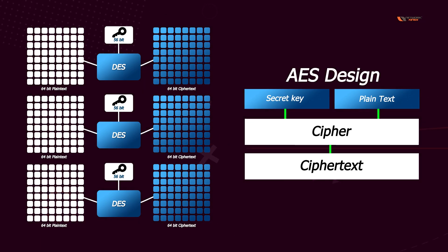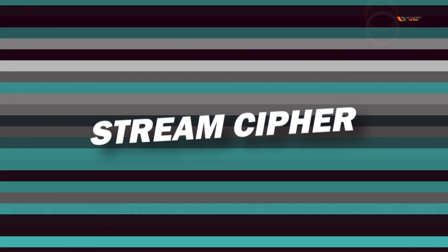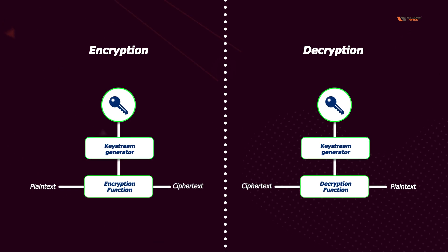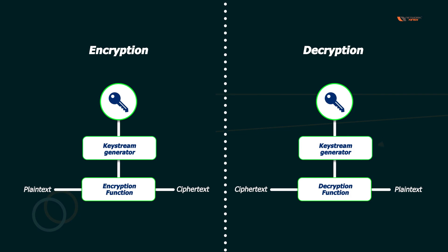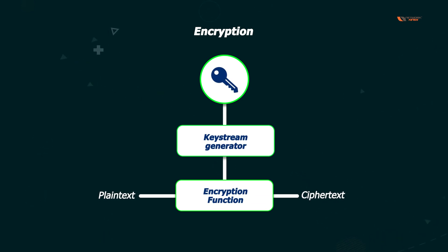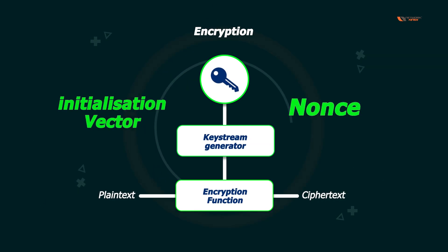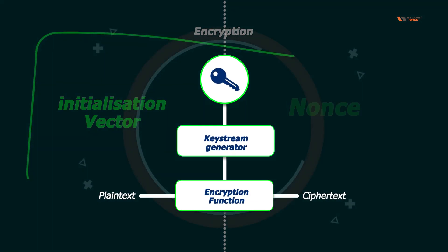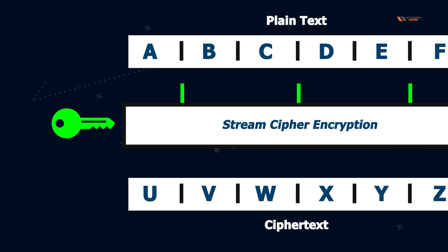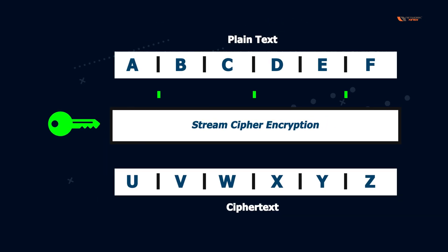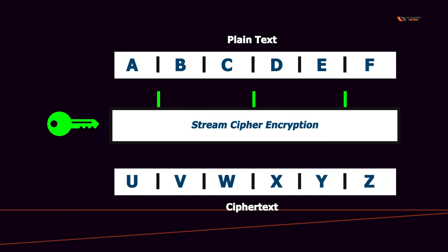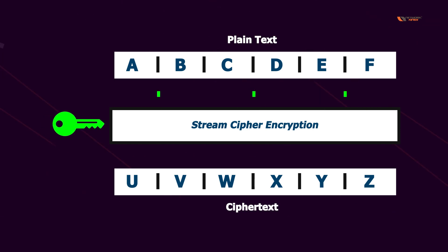Now let's talk about stream cipher. Stream cipher takes your message as a continuous stream and encrypts it as-is — you don't break it into smaller chunks. You have the message and a key as big as the message. If the key is not as big as the message, you use something called a nonce or an initialization vector to encrypt the message. Stream cipher is less error-prone because the message is continuous, and it is very quick at converting plain text into cipher text.